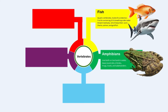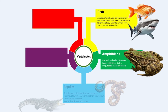Amphibians are vertebrates that can live both on land and in water. They have moist skin which helps them breathe. They have full limbs which help them walk or hop. Some examples of amphibians are frogs, toads and salamanders.